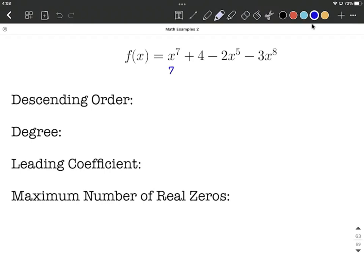Next, we have a constant. So we could think of that as 4 times x to the 0 power, because x to the 0 is 1. So that term has a degree of 0. Next, we have degree 5, and finally degree 8 for each individual term.